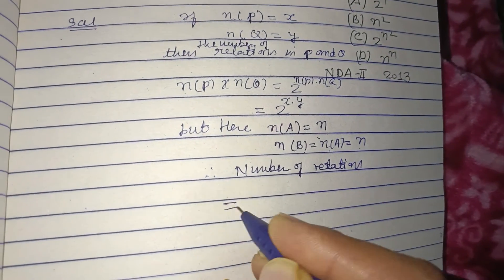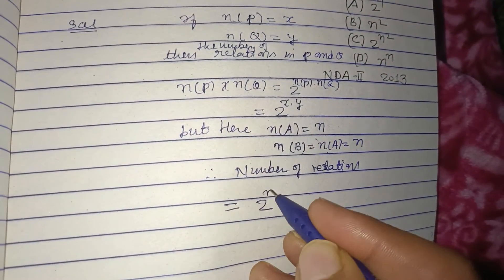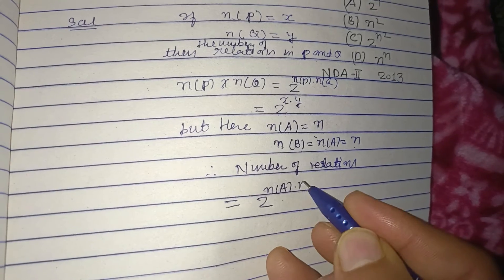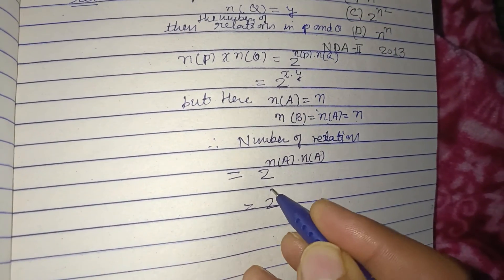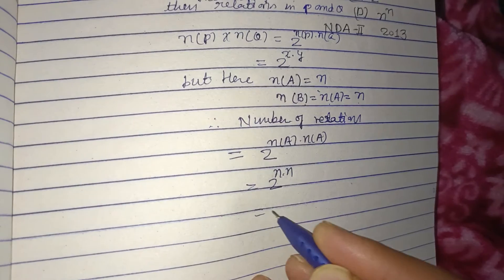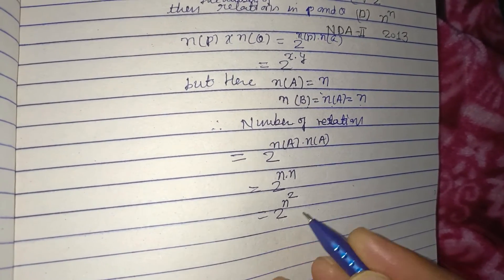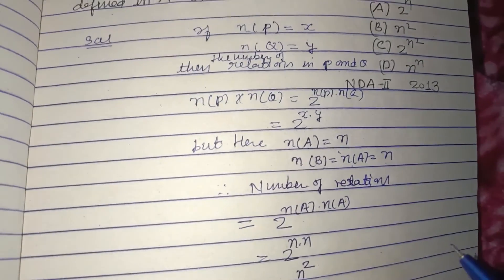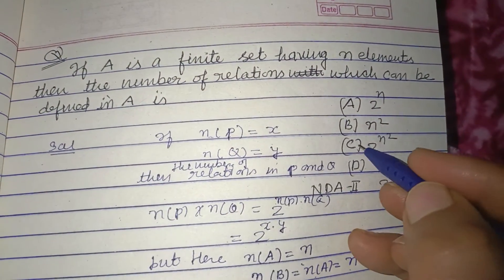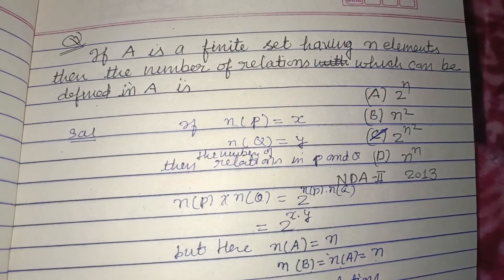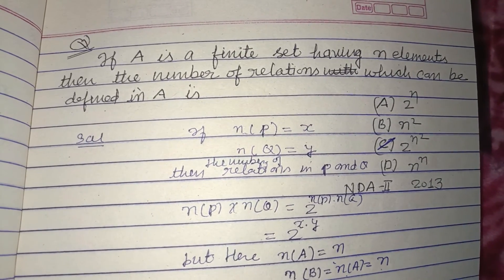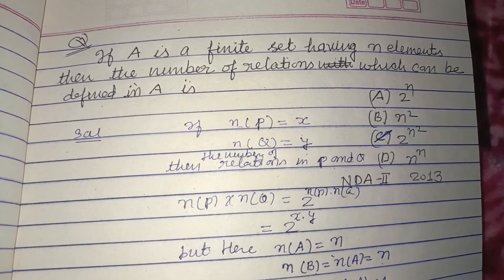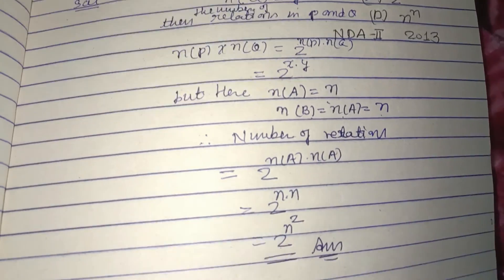equal to 2 to the power n(A) into n, or 2 to the power n squared. So this is the correct answer which is found in option C. Option C is correct. I hope you got it. Please like the video, subscribe the channel. Thanks for watching.